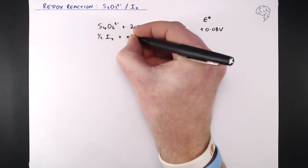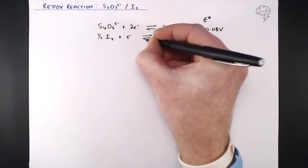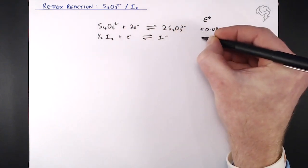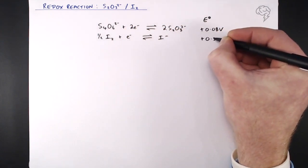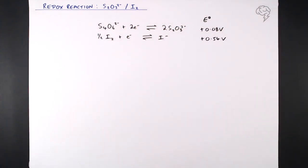But that reacts with half I2 plus an electron gives I- of course these are both dynamic equilibria. Our E0 values, as standard, I've put the most negative on top, so that's plus 0.08 for our thiosulfate half equation, and plus 0.54 for iodine iodide half equation.